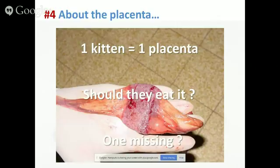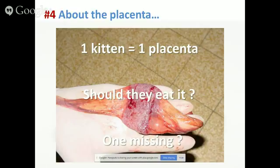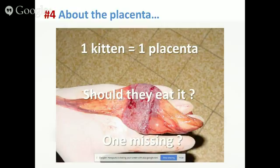If one placenta is missing, that's why you need to count and verify that for one kitten you have expulsion of one placenta. If one is missing, it can stay in the uterus. At this time the cervix is open, so bacteria from the vagina and environment can enter the uterus and lead to an infection — postpartum endometritis — which can make the queen sick and alter the quality of the milk, as bacteria can migrate to the milk and intoxicate the kittens. Always check you got all placentas out, and if one is missing, see your vet quickly to avoid serious issues during lactation.